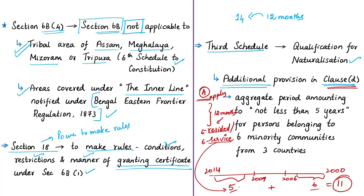The amendment reduces this 11-year period to five years for persons who will be granted citizenship based on this amendment — that is, for members of the six minority communities from those three countries. These are the amendments proposed by the Citizenship Amendment Bill of 2019.